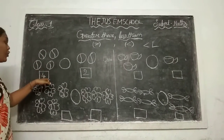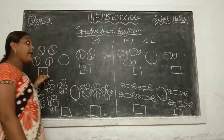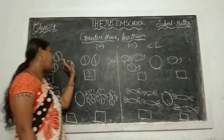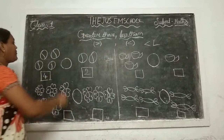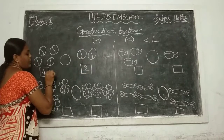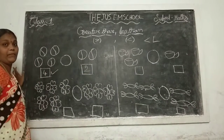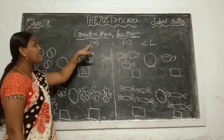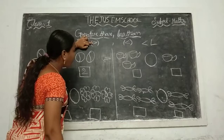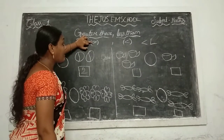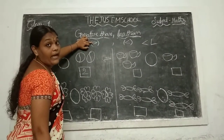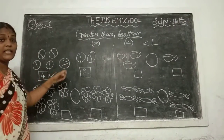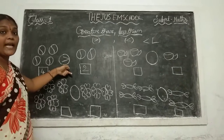Which is the big number? 4. 4 is the big number. You put the symbol here — greater than or less than. First observe which is the big number. 4 is the big number. 2 and 4 you compare, 4 is the big number. This mouth is open to that side — the big number side. This symbol is called greater than.